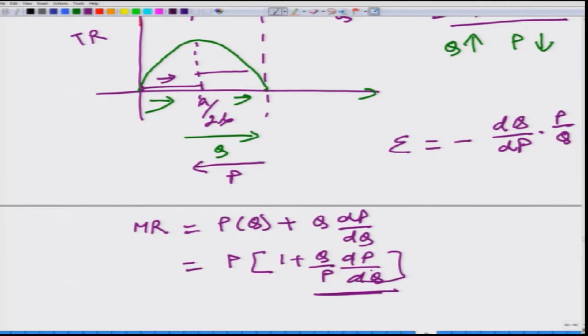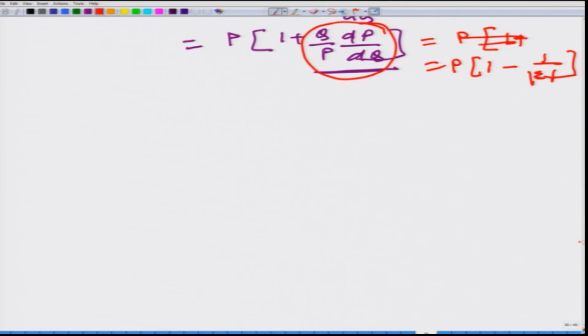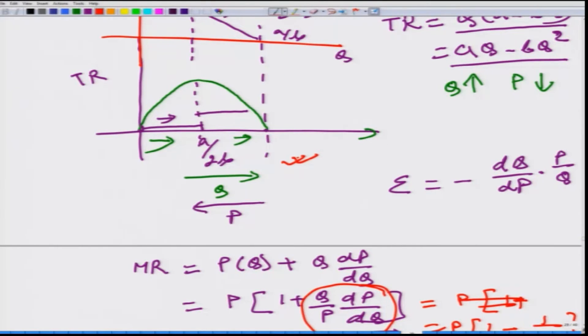The way we have defined elasticity, what is elasticity? Elasticity we defined price elasticity of demand as dQ by dP, P by Q. So this particular entity is nothing but it is an inverse of price elasticity of demand with a negative sign. So this we can write it as P 1 minus 1 by mod of epsilon. This is exactly what we have done here in a particular case of downward sloping linear demand function.